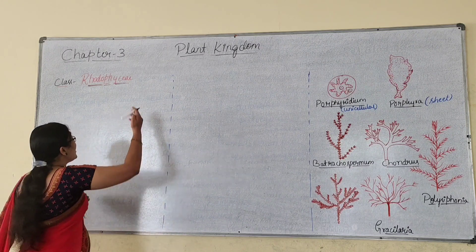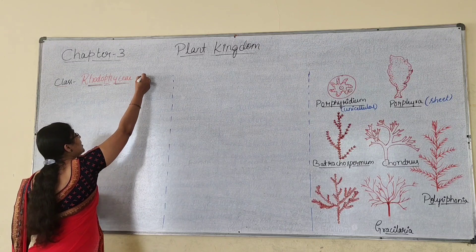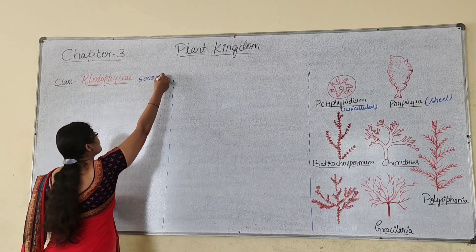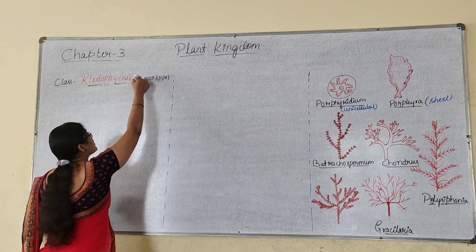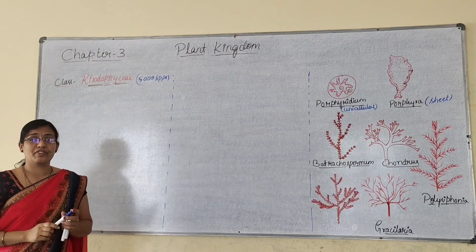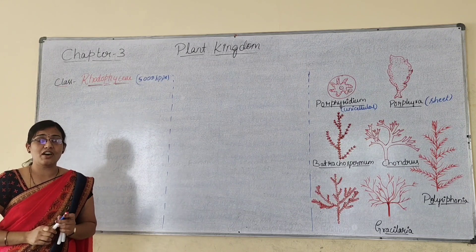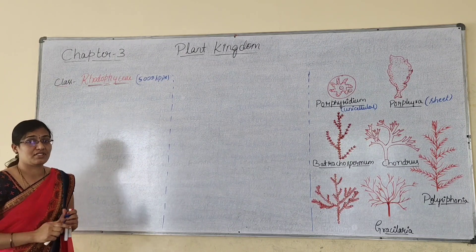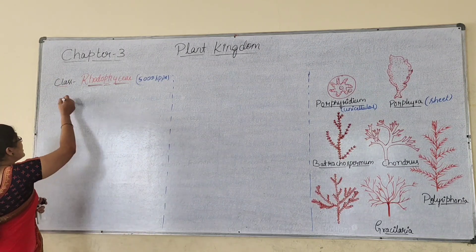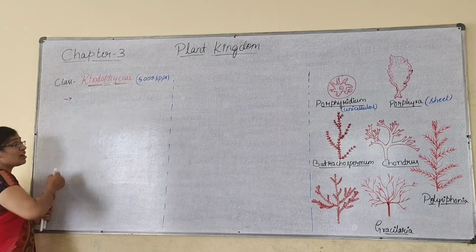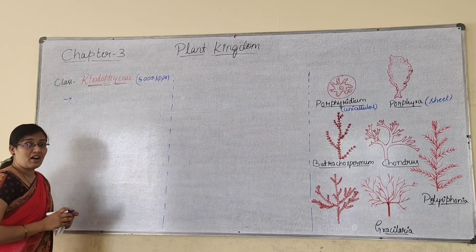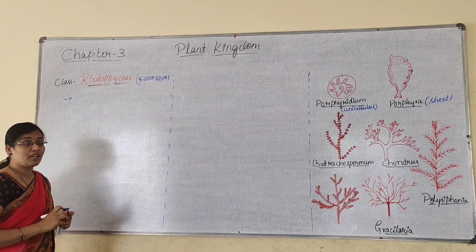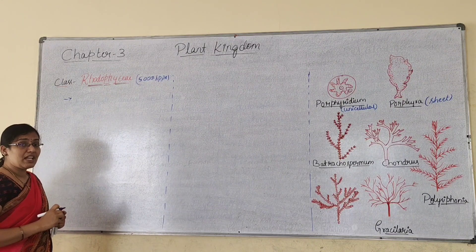There are above 5000 different species present under this class — that is class rhodophyceae. The members of rhodophyceae include rhodophyta and related forms, commonly called red algae.